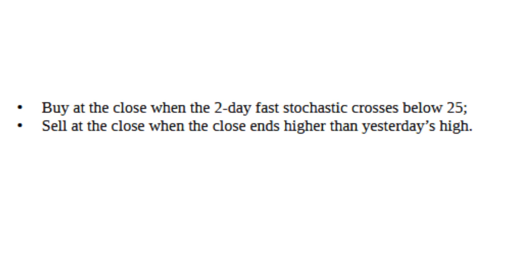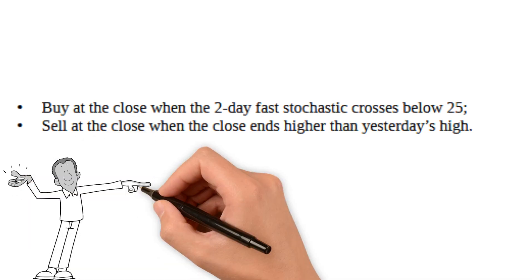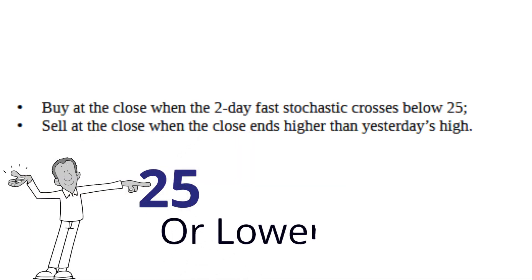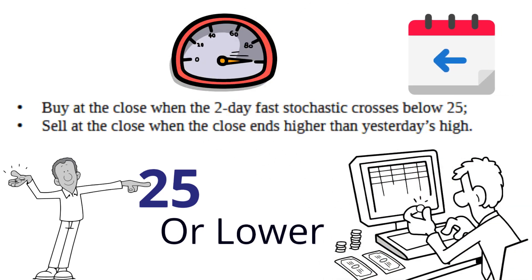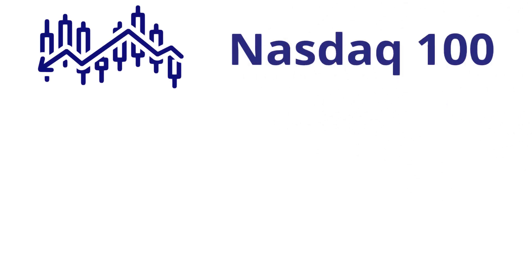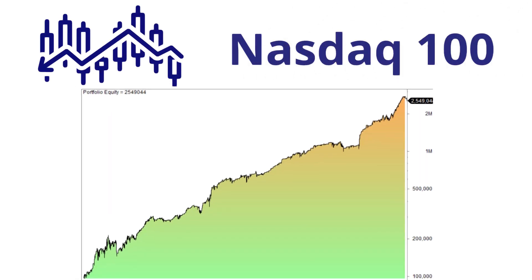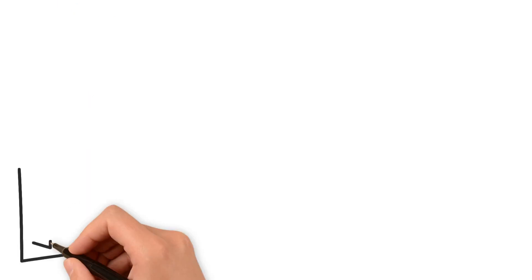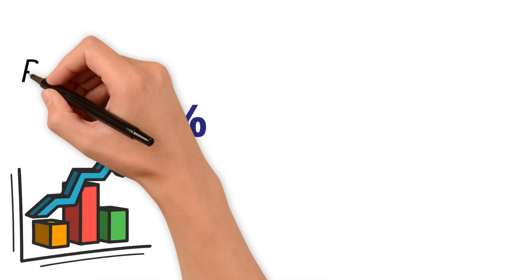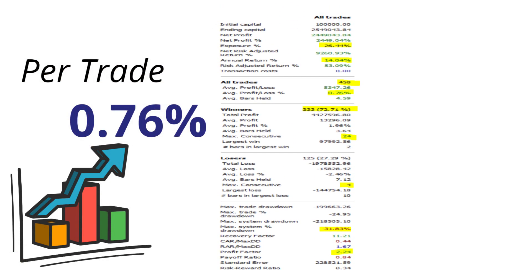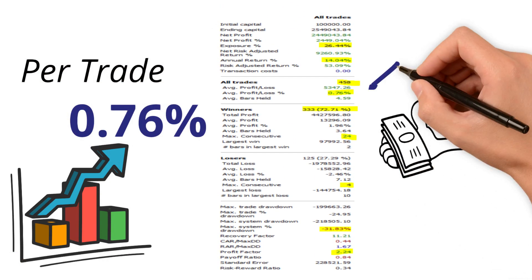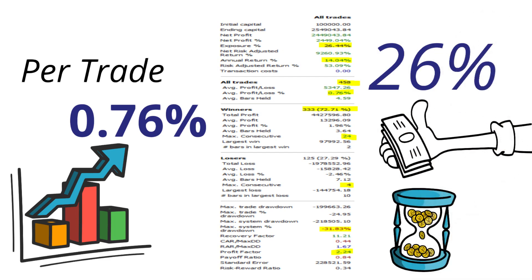We use a two-day value of the fast stochastic variable and we buy the close when it hits 25 or lower. We sell on a day with strength where the close ends higher than yesterday's high. When we backtest these two trading rules on NASDAQ 100, we get a pretty stable equity curve as indicated on the screen. The average gain is 0.76% per trade, which gives you a wide margin of safety to cover slippage and commissions. Note that you're invested only 26% of the time.